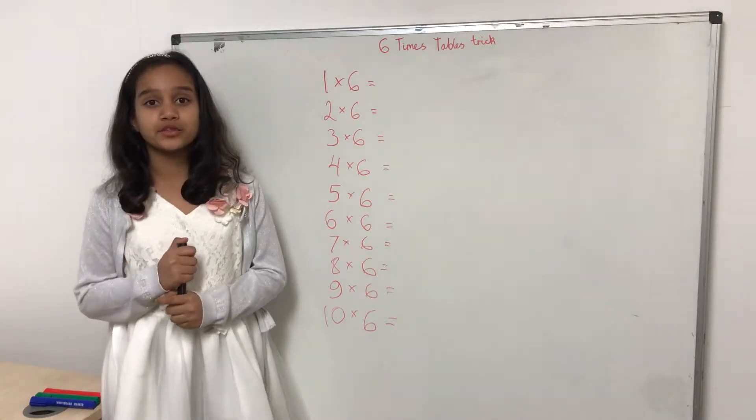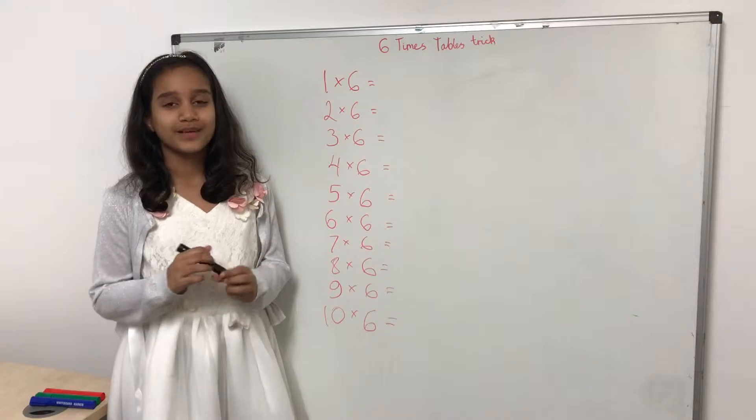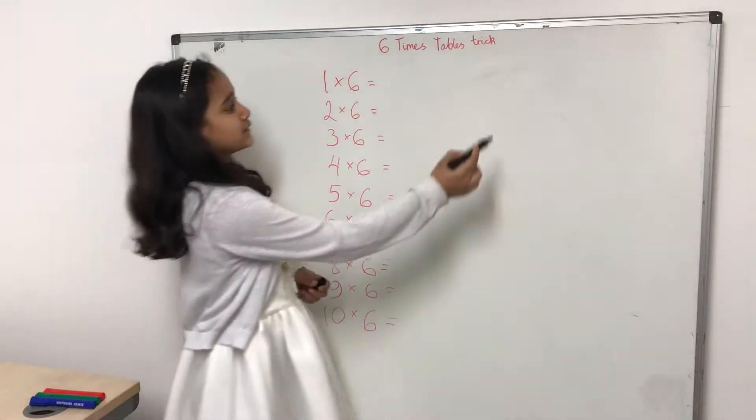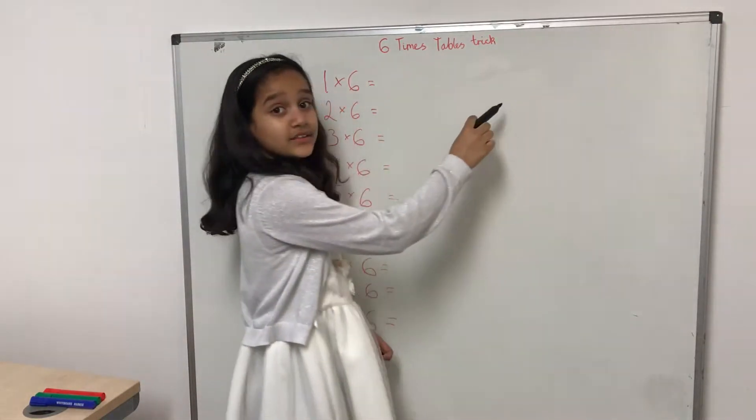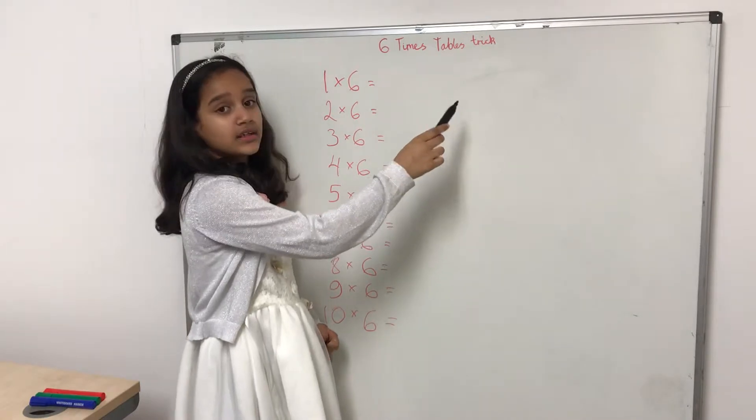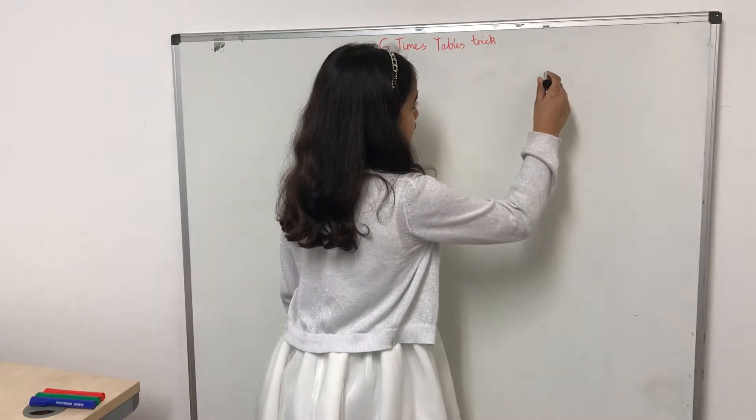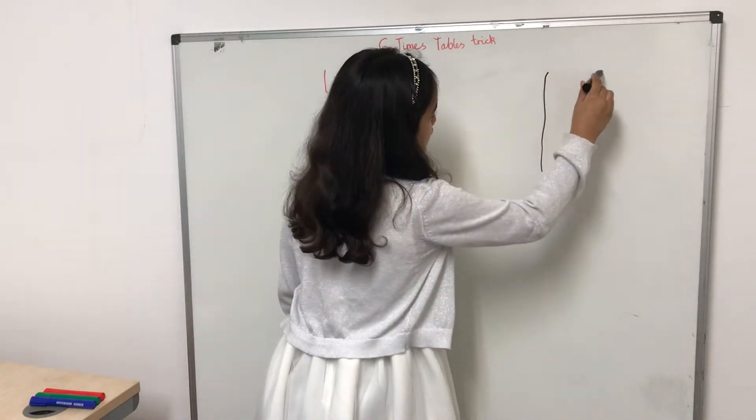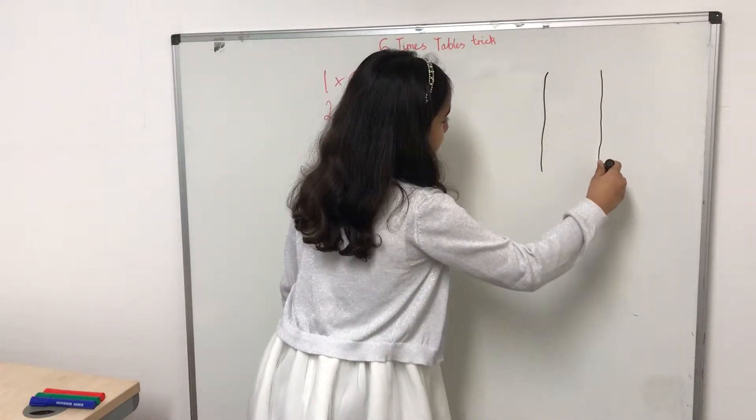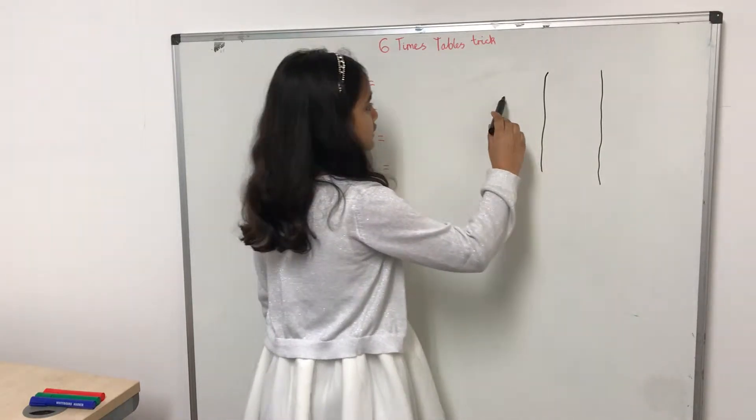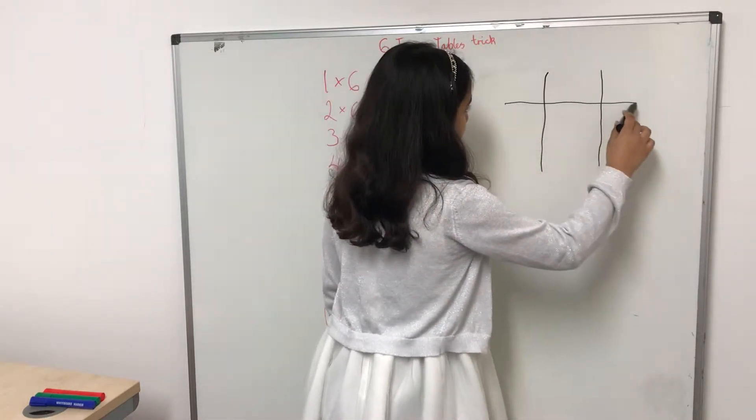So you're going to start off by drawing a tic-tac-toe grid, like this. In case you don't know what a tic-tac-toe grid is, it's two vertical lines and two horizontal lines. So vertical lines from up to down or down to up, whichever you prefer, and then two horizontal lines, left to right or right to left.